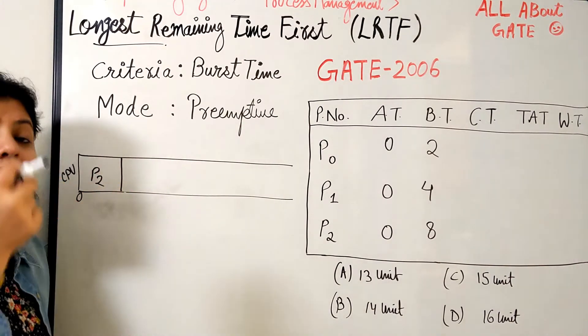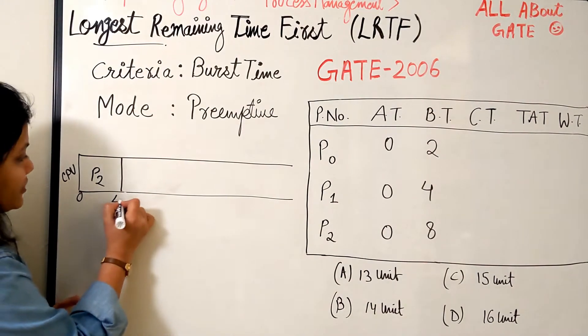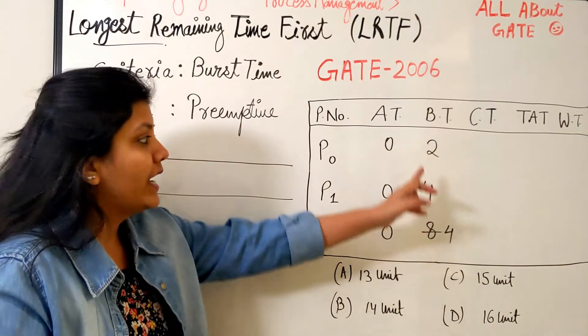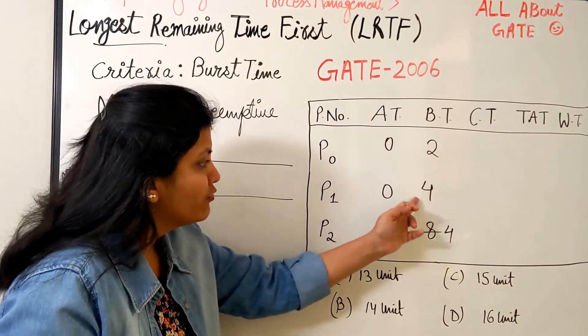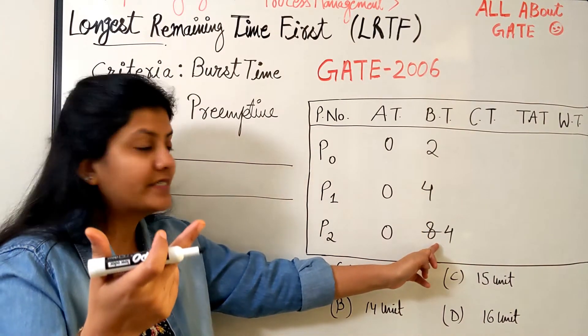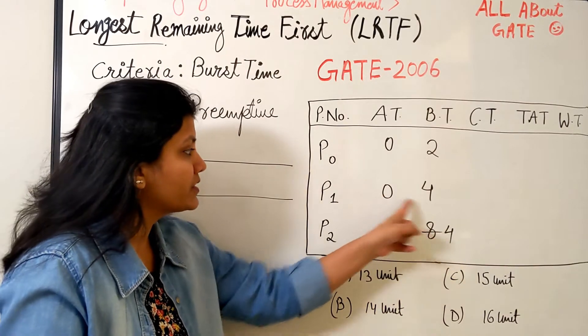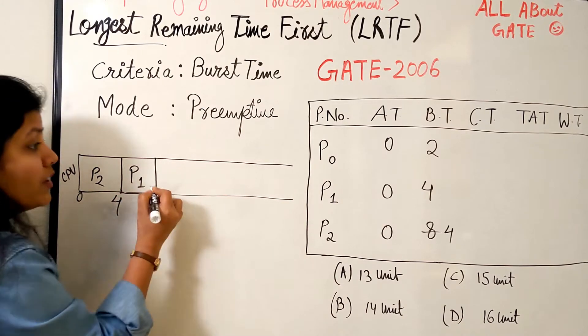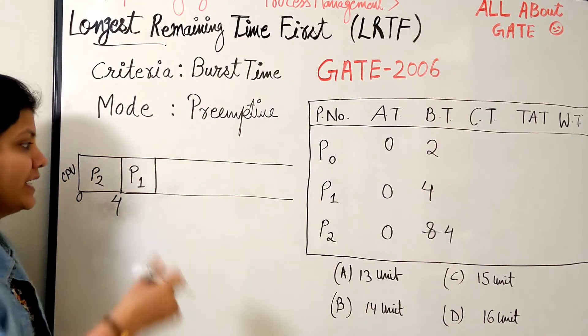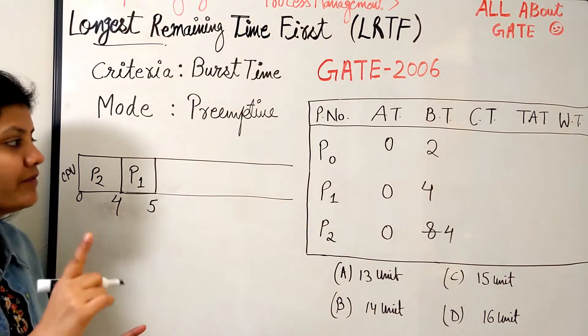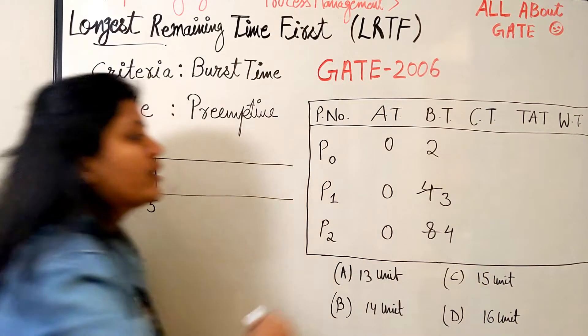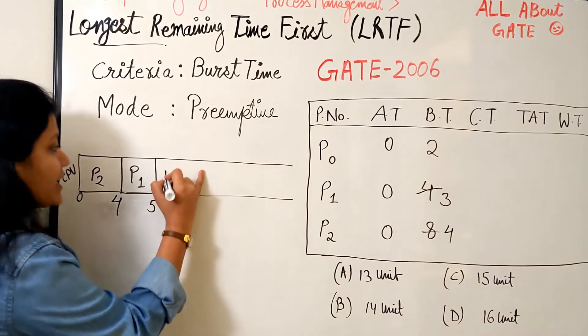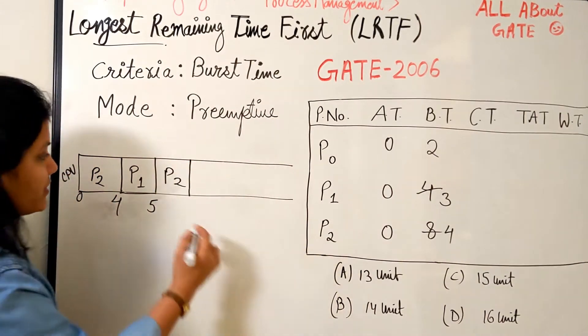Now I will look at my system once again. We have 2, 4, 4 - the highest remaining time is 4 and 4, but which is the lower process ID? P1. So the chance will go to P1. Now P1 will also not be given the complete 4 bursts. Let's give it only a single burst. When I give it a single burst, it becomes 3. Now you see among 2, 3, 4, once again who becomes the longer process? P2. So the chance again goes to P2.